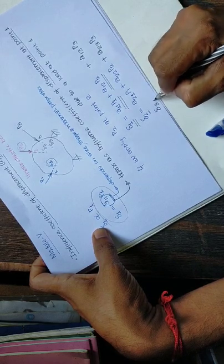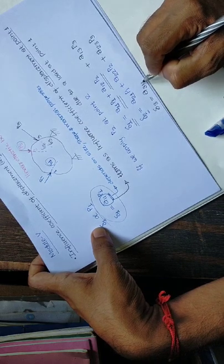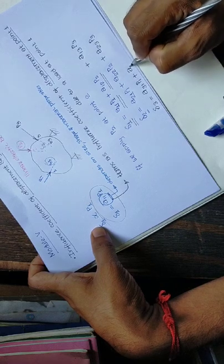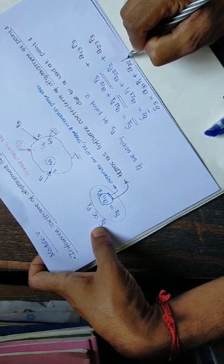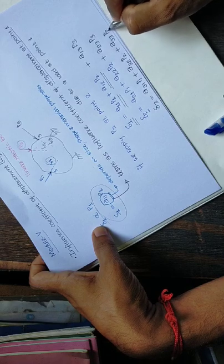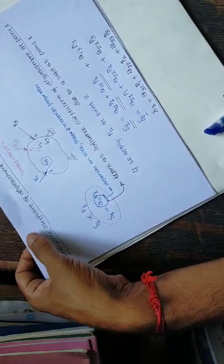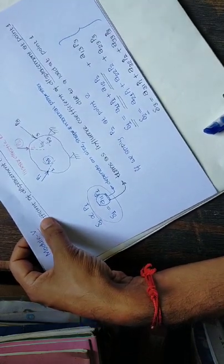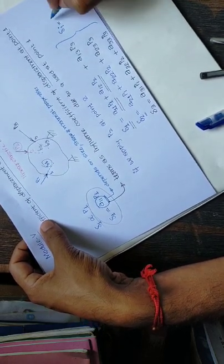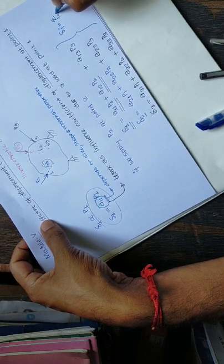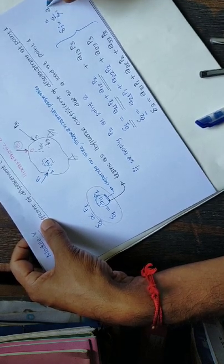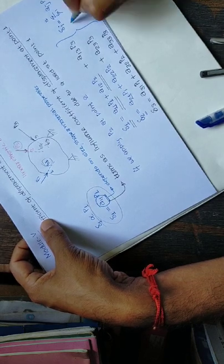Similarly, delta3 equals the influence coefficient of displacement at point 3 due to a load at the first point, into P1, plus the influence coefficient at point 3 due to a load at the second point, into P2, plus the influence coefficient at point 3 due to a load at point 3, into P3, plus etc. In general, displacement at the i-th point is equal to the sum over j from 1 to N of Aij times Pj.